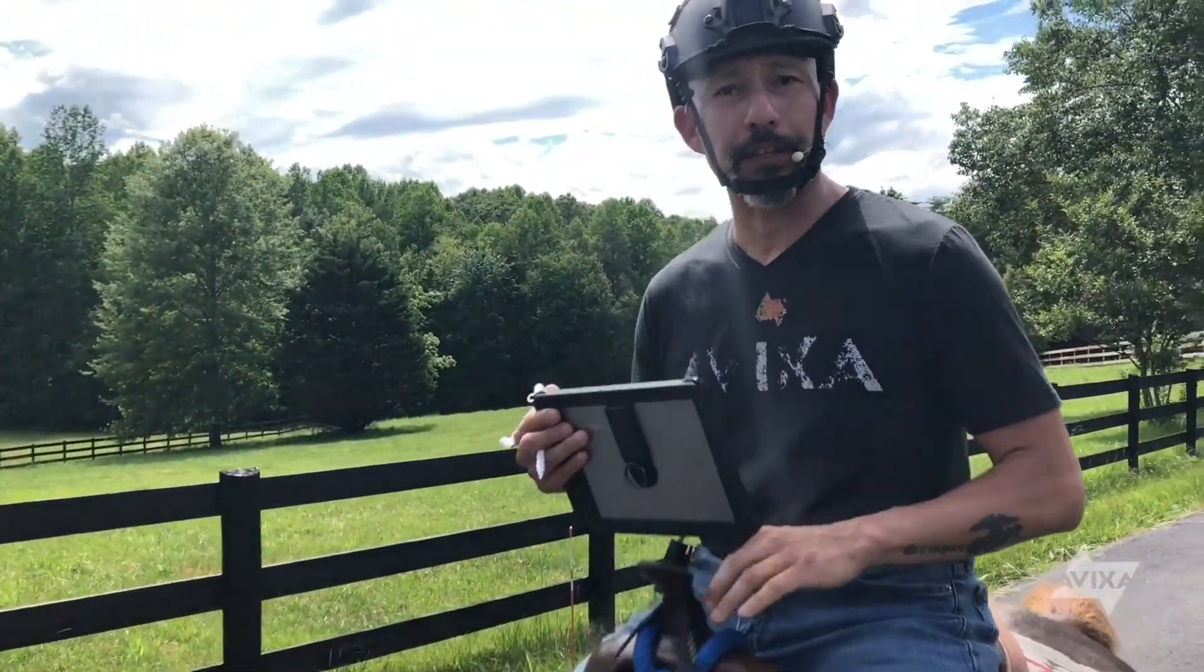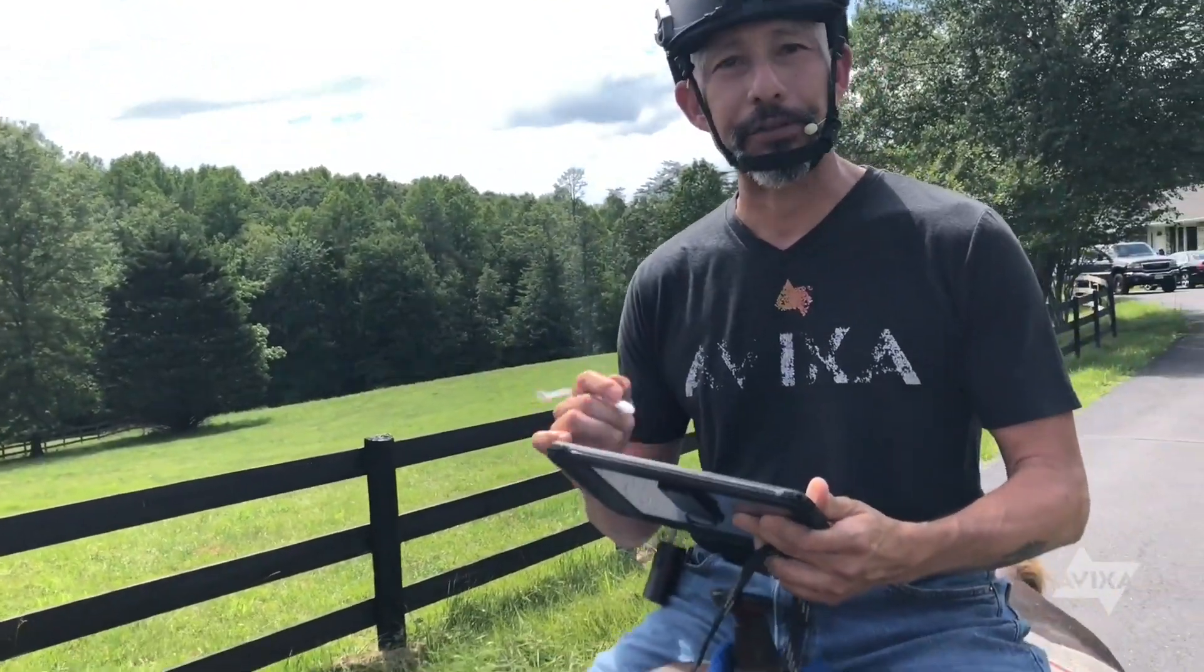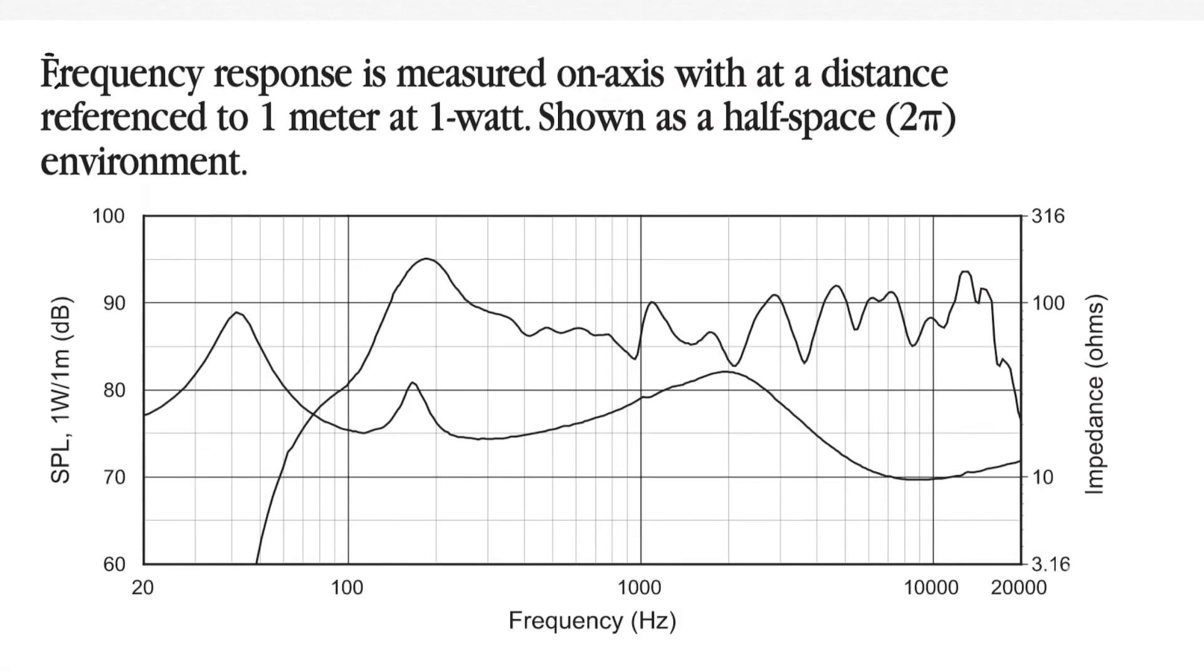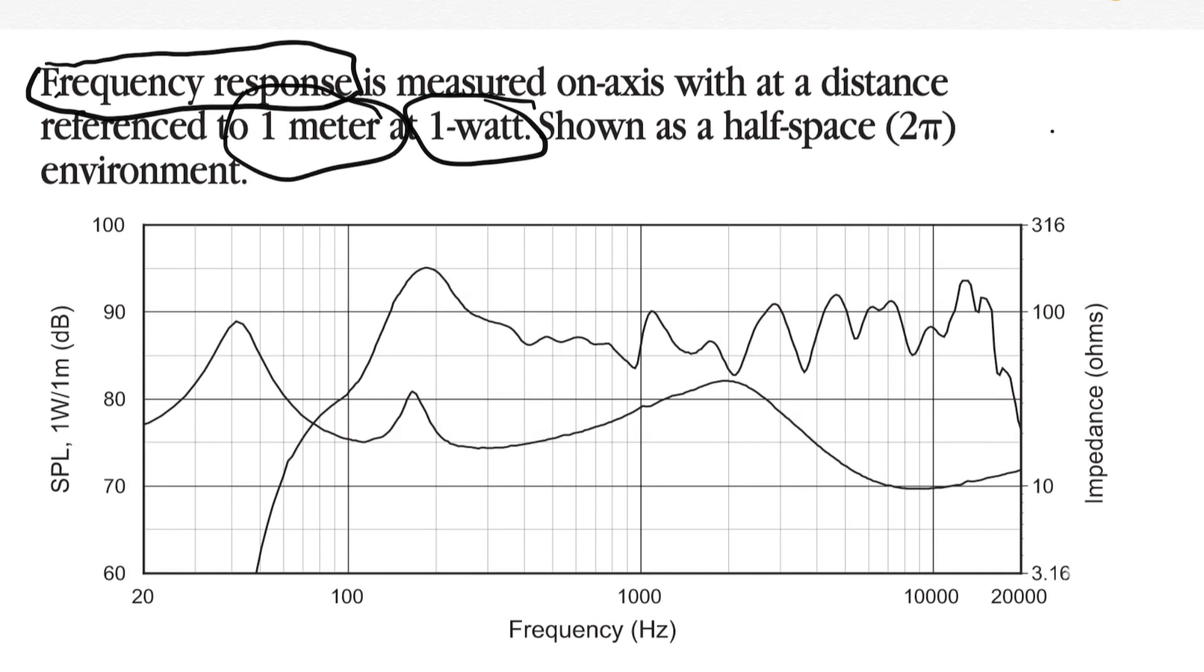So let's first take a look at frequency response of our loudspeaker. Frequency response is going to tell me what frequencies this loudspeaker can reproduce. Given one watt at one meter, what is this loudspeaker going to reproduce? So I can see here at 100 hertz, if I give it one watt at one meter, it will produce about 81 dB SPL.